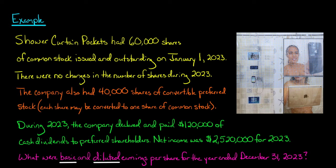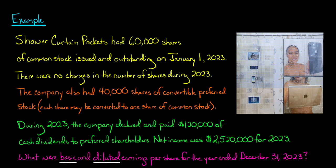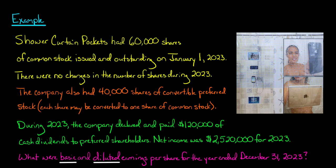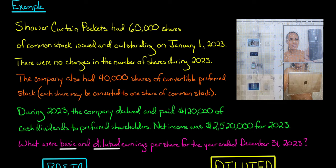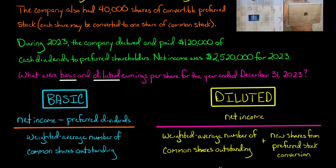During 2023, the company declared and paid $120,000 of cash dividends to its preferred shareholders. That will be an adjustment in the numerator — when we calculate diluted EPS we do not subtract it, whereas we do subtract it for basic EPS. The company's net income was $2,520,000 for 2023. The question is: what was the company's basic earnings per share and diluted earnings per share for the year ended December 31st, 2023?